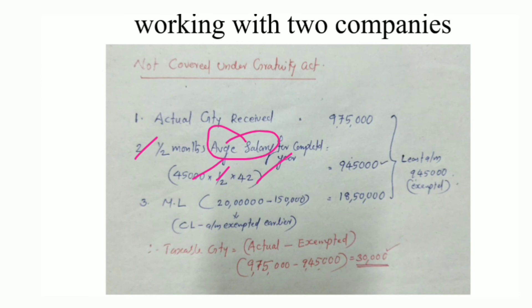The average salary is Rs. 45,000 per month. The completed years are 42 years and 10 months — so 42 completed years are taken. The calculated amount is 1/2 × 45,000 × 42 = Rs. 9,45,000. The ceiling limit is Rs. 20,00,000.